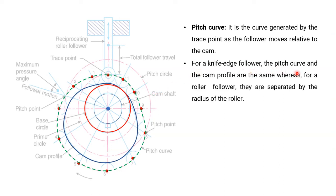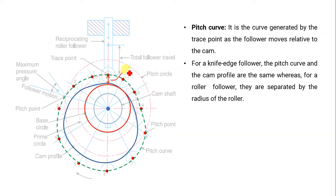If we connect these trace points, the profile or curve generated is called the pitch curve. For a knife-edge follower, the pitch curve and the cam profile are the same, whereas for roller followers they are separated by a distance equal to the radius of the roller. In the case of a roller follower, the distance between the cam profile and the pitch curve will be equal to the radius of the roller, as you can see from the figure.